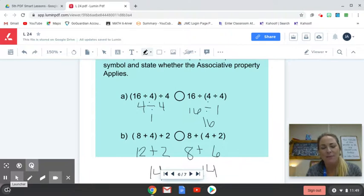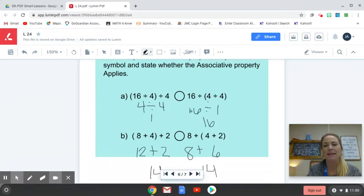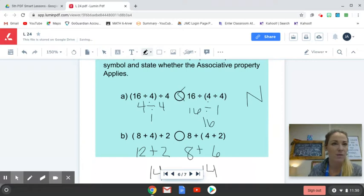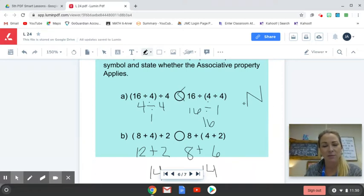All right, sorry about that. I had to take a quick phone call. But just to move back to the right side here, we have 4 divided by 4 is 1. I drop down my 16. 16 divided by 1 is 16. So definitely 16 is greater than 1, which leaves me with an answer here of less than. And does the associative property apply? And this is a no. That's a big no there. The associative property doesn't apply. It's a division problem. We have the exact same digits here. Notice 16, 4, 4. 16, 4, 4. They're in the same order. But when different numbers are grouped, it does make a difference. Meaning the associative property does not apply there. Doesn't work for division.